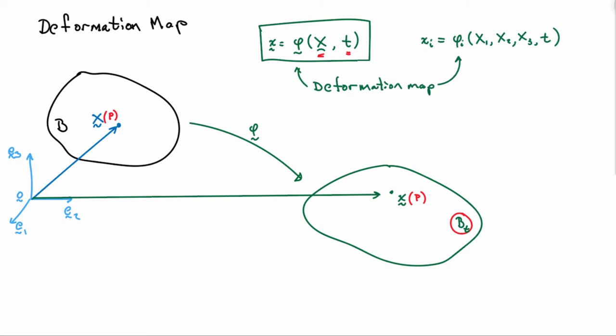We can also write this out in components, so it says little x_i is equal to phi_i which depends on—and I have expanded all the way out to capital X1, capital X2, capital X3, and time. And phi itself is known as the deformation map.